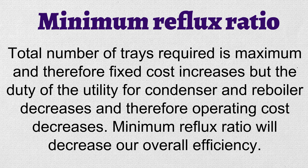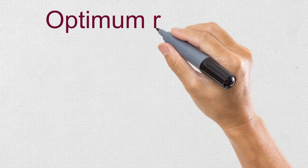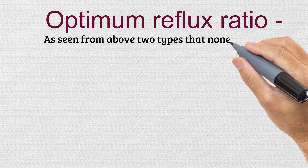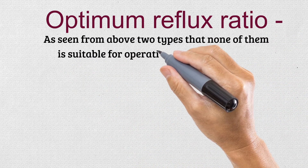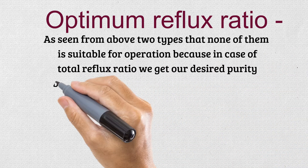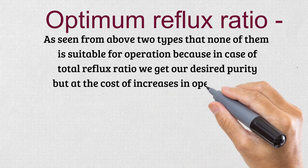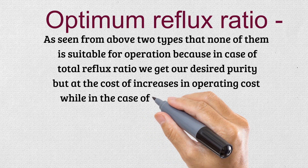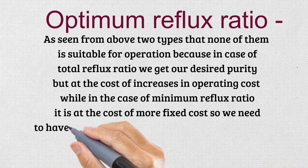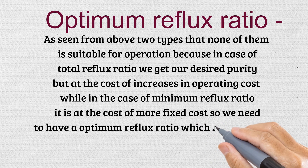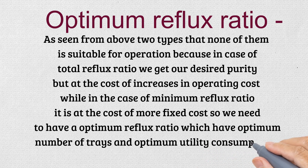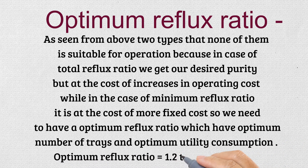The third type is optimum reflux ratio. As seen from the above two types, neither is suitable for normal operation — total reflux ratio achieves desired purity but at the cost of high operating expense, while minimum reflux ratio drives up fixed capital cost. Optimum reflux ratio balances both fixed cost and operating cost, giving an optimum number of trays and optimum utility consumption. Optimum reflux ratio is normally 1.2 to 1.5 times the minimum reflux ratio.